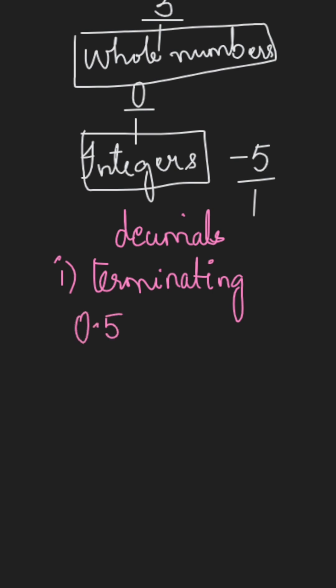This 0.5 can be written in the form of a fraction, which is 1 over 2. Hence, all the terminating decimals can be written in the form of a fraction where it satisfies both conditions to be a rational number. We can conclude all terminating decimals are rational numbers.